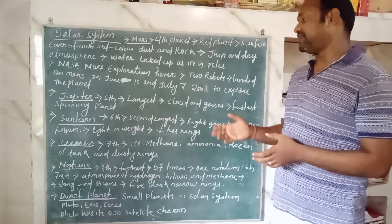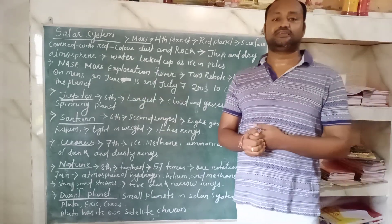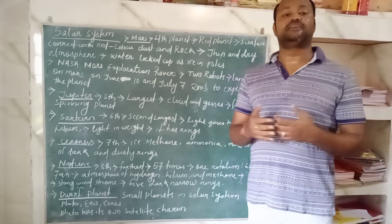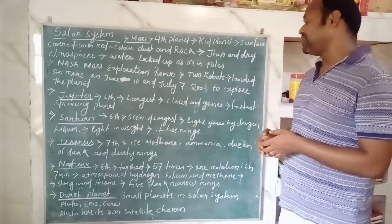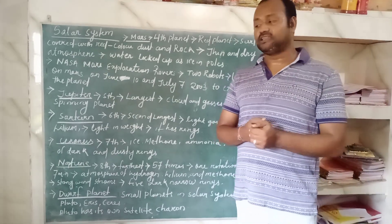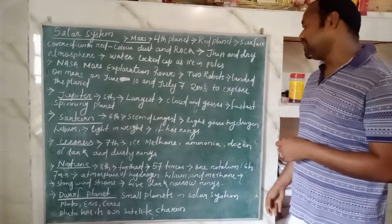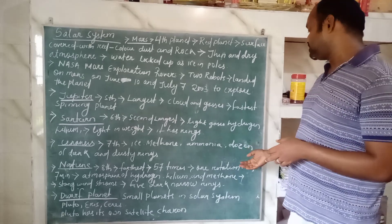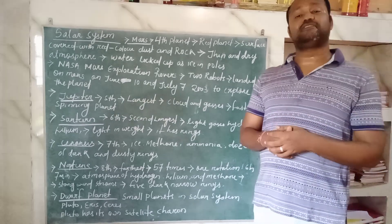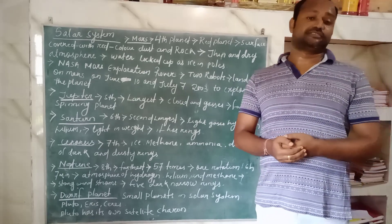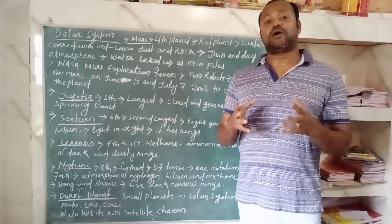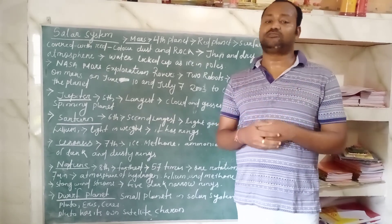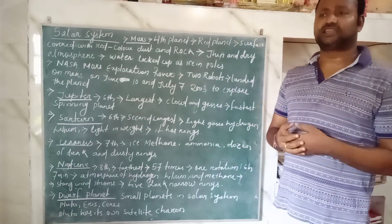Next is Uranus. Uranus is the seventh planet in the solar system. It is made up of ice, methane, and ammonia gases. Most importantly, it has about 12 dark, dusty rings around it, but these rings are not visible.